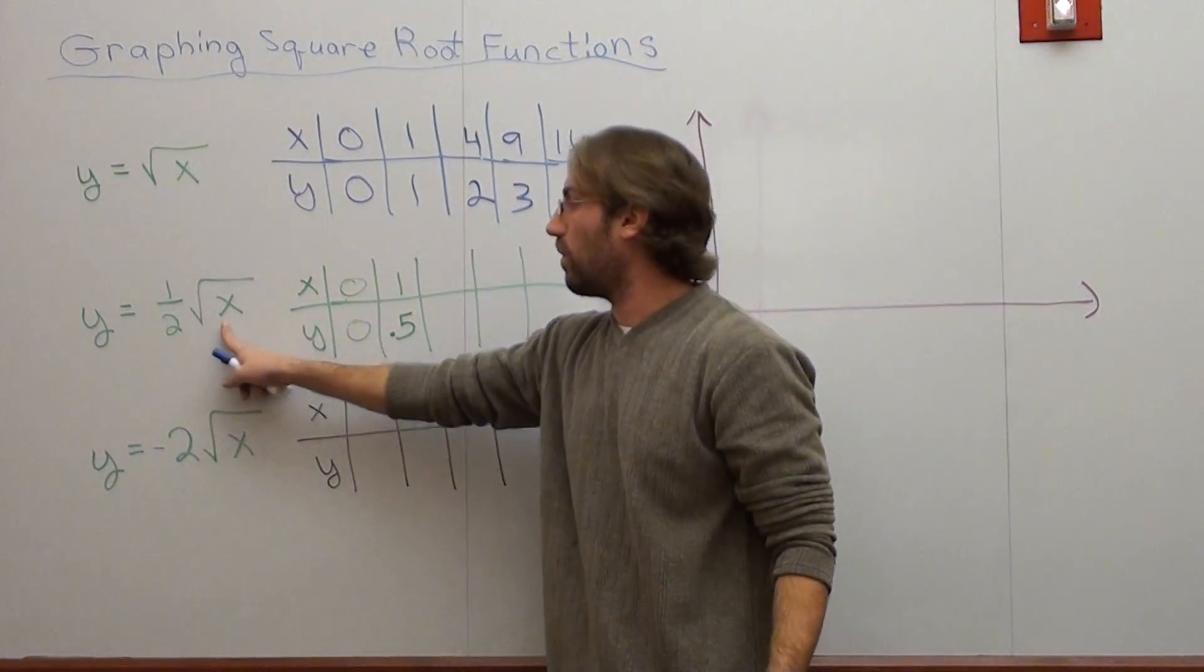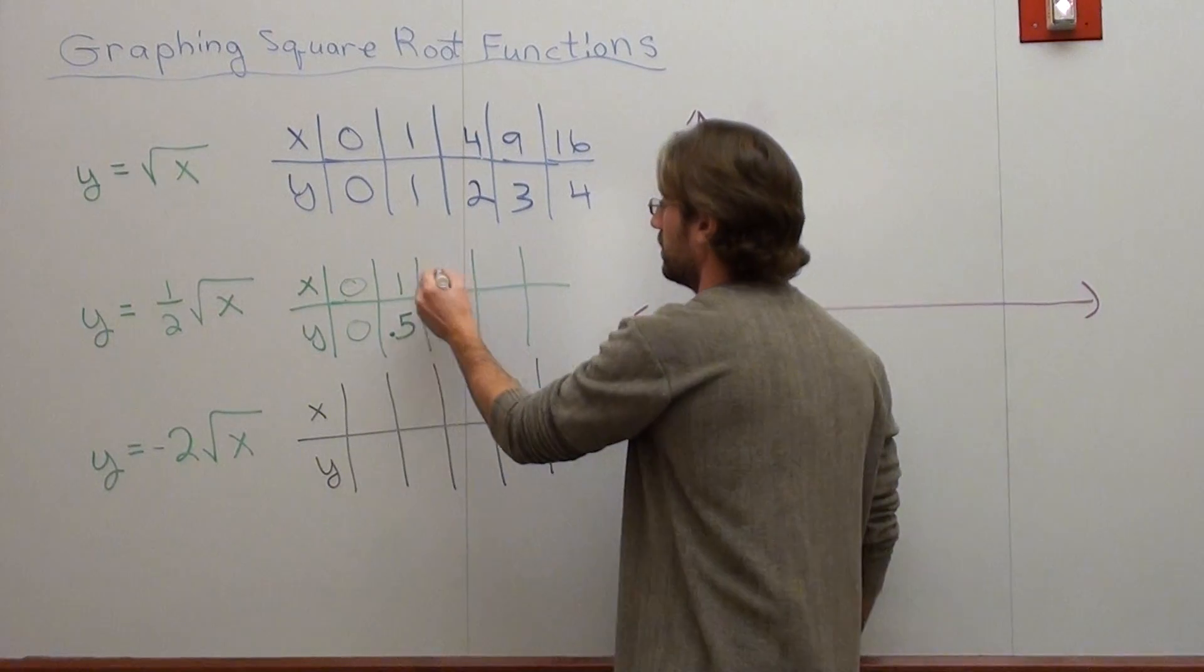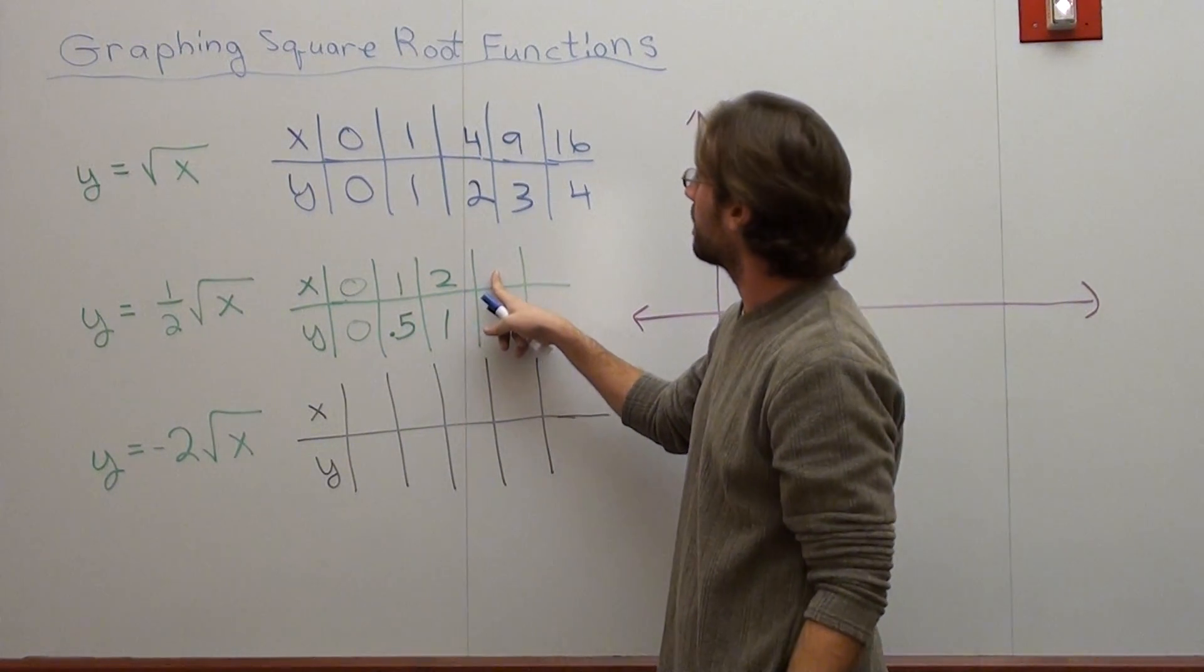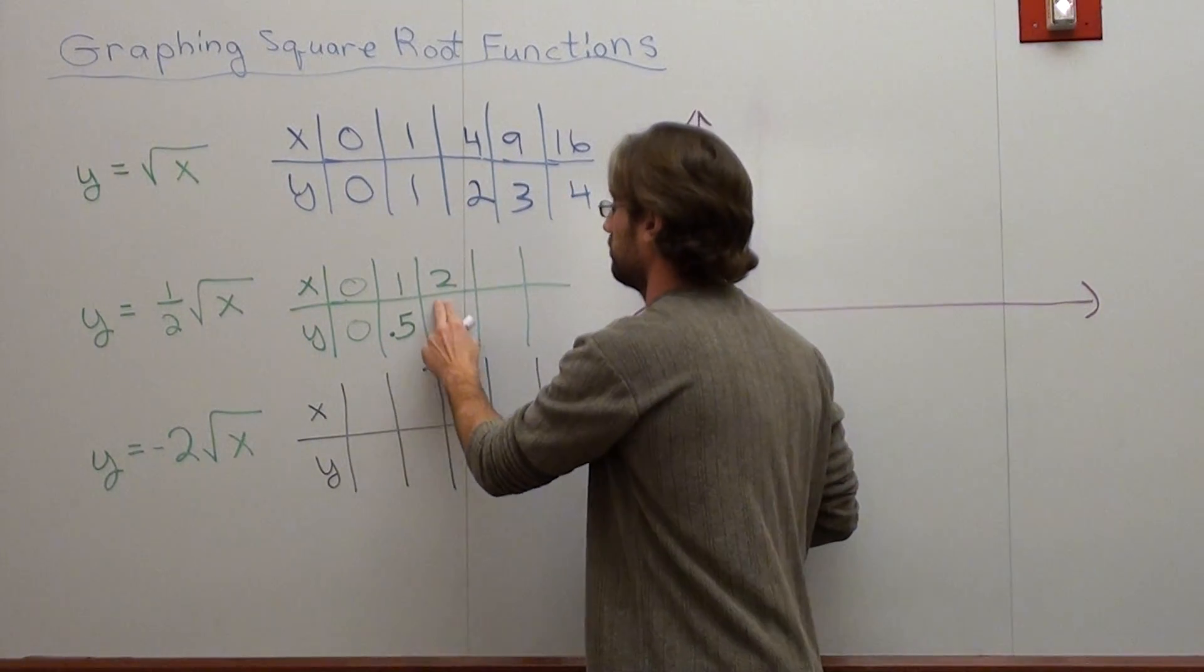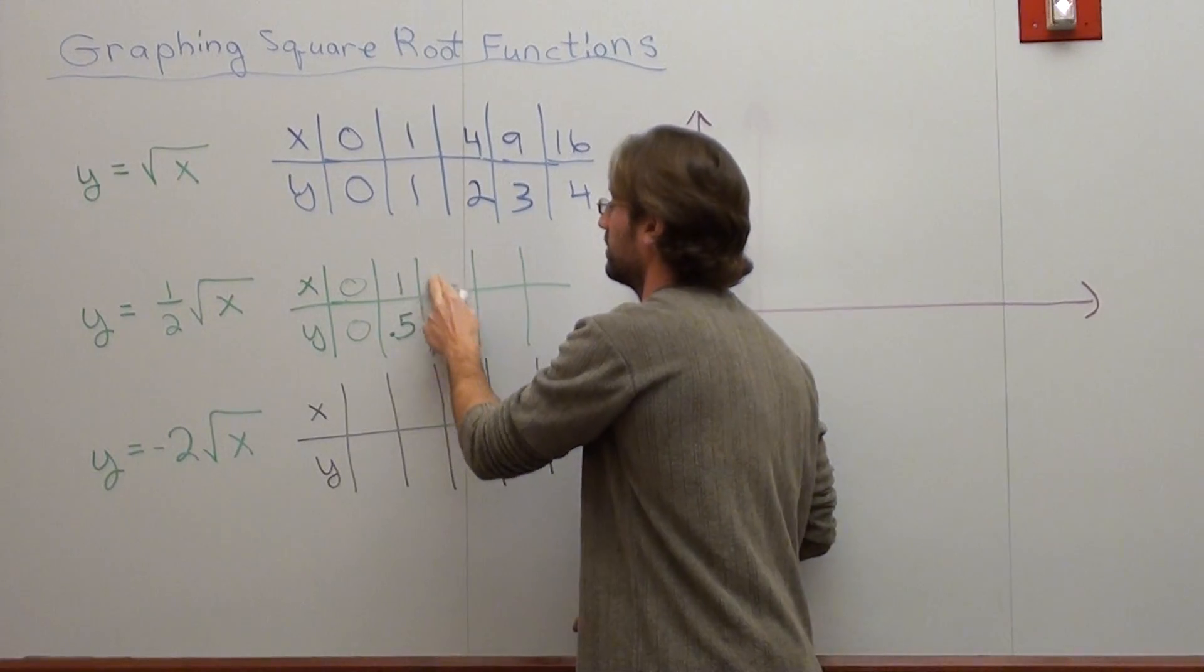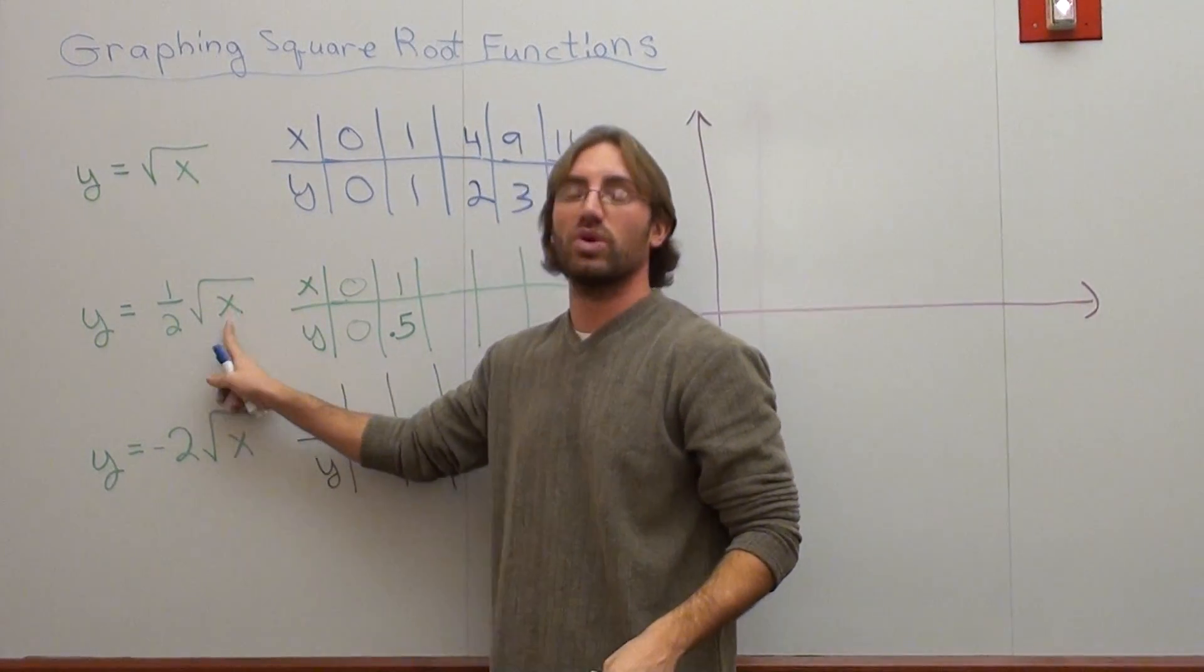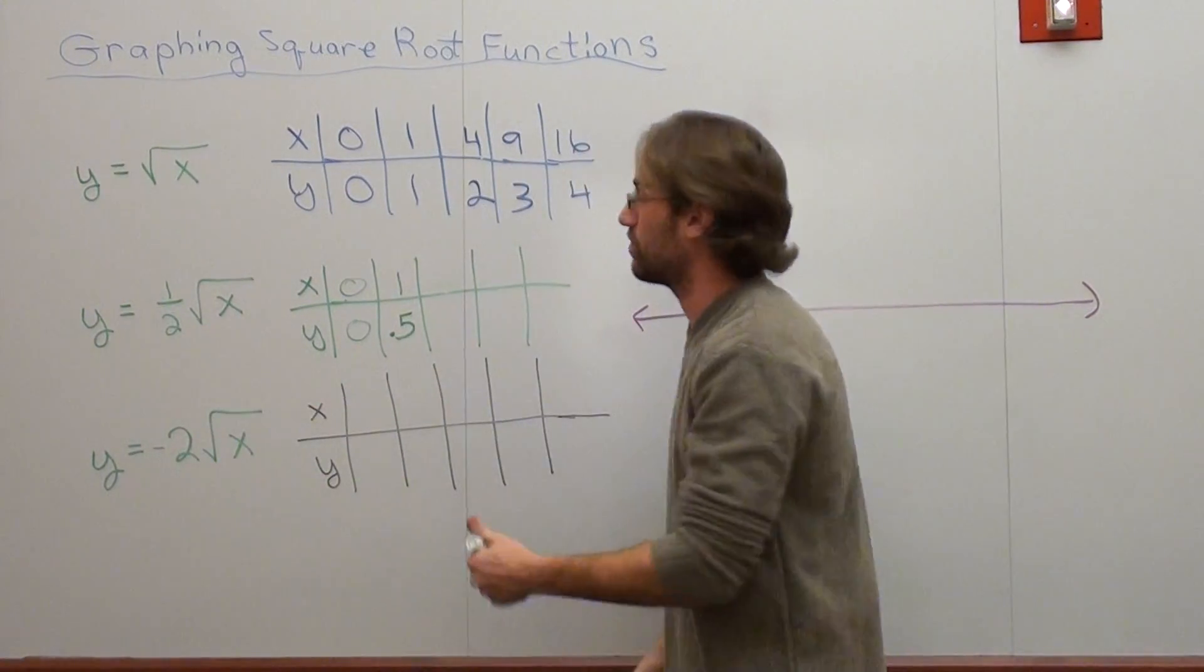Just like what happens with parabolas or linear problems or exponential problems, it's going to affect how high or how low a graph raises. So we got a one half in front of here. Let's plug in the same value, zero, one, four, nine, and 16. When I substitute in zero, square root of zero is zero times one half is still zero. When I substitute in one, square root of one is one, but one times one half is one half or 0.5. When I substitute in four, square root of four is two, half of two is one.